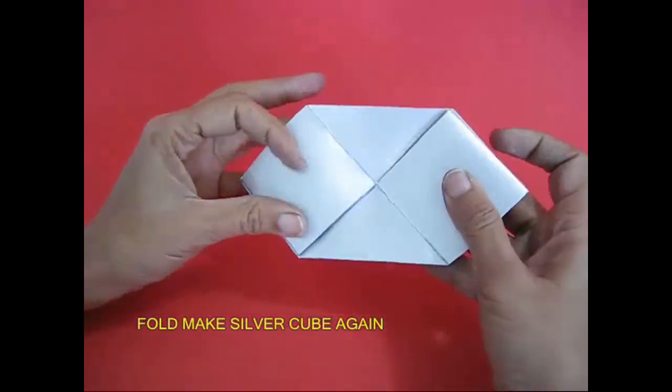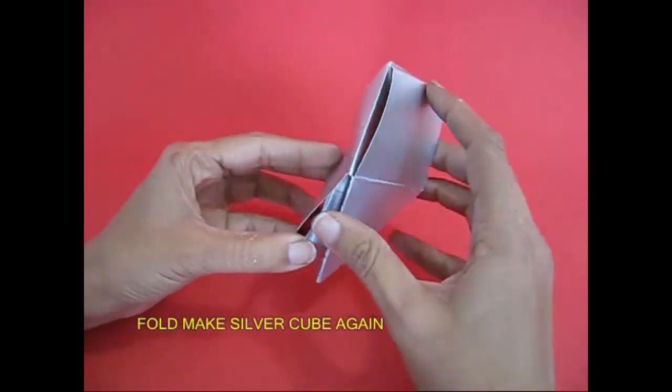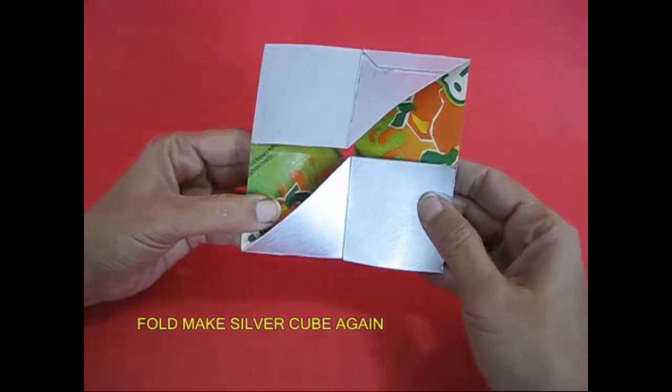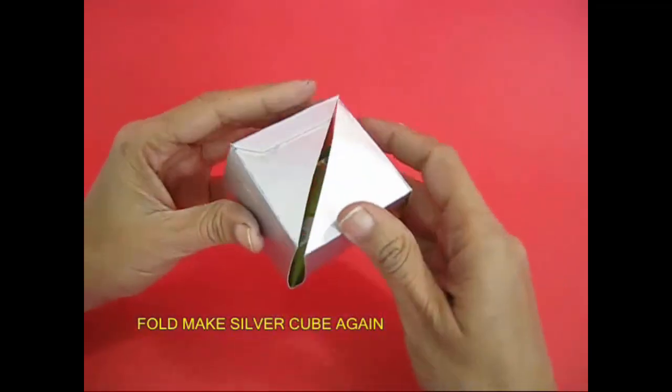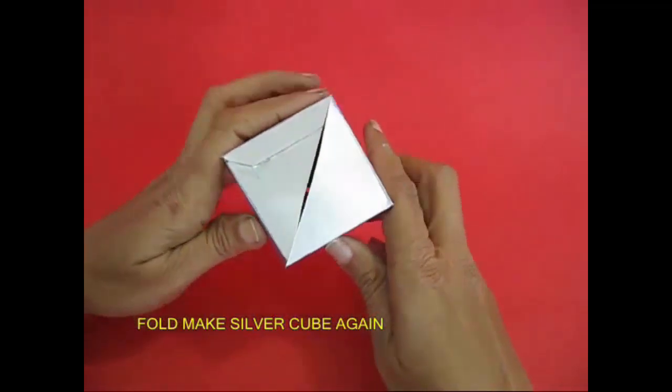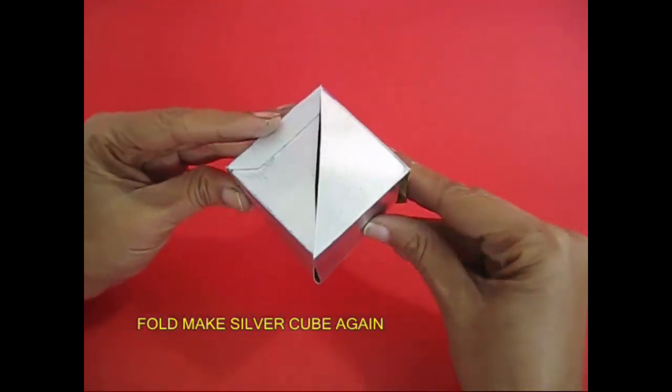Look. This is the inside and outside cube. You can flip it. You can make the silver cube. This is the inside and outside cube.